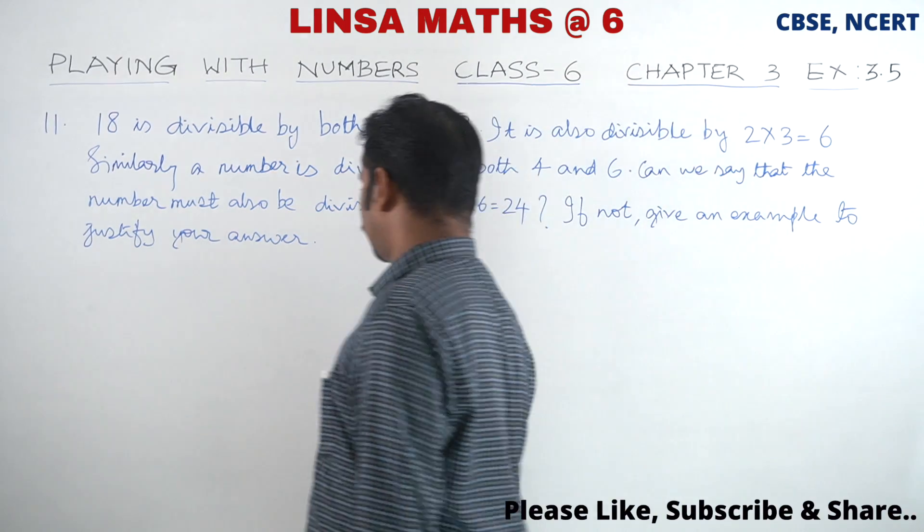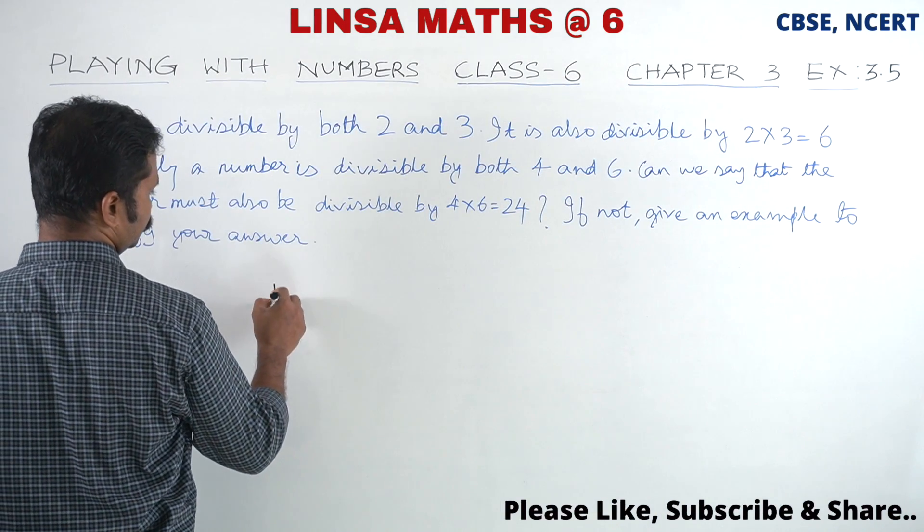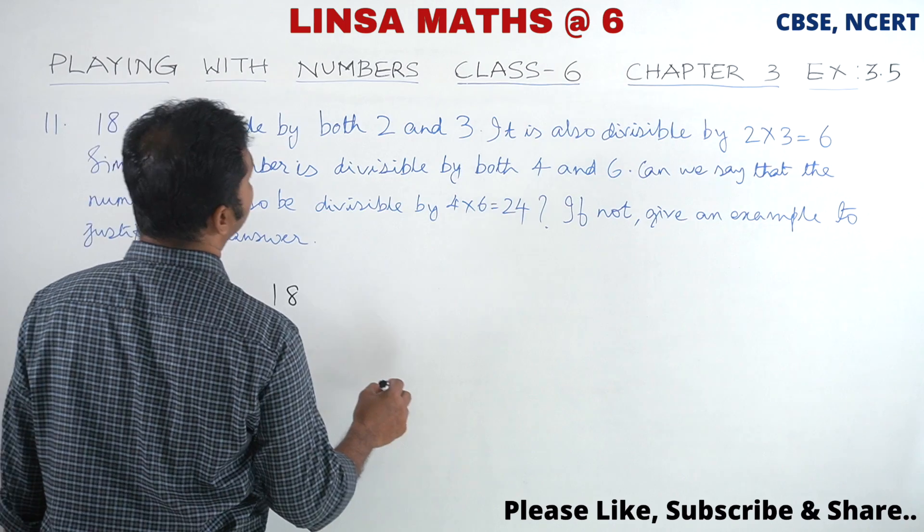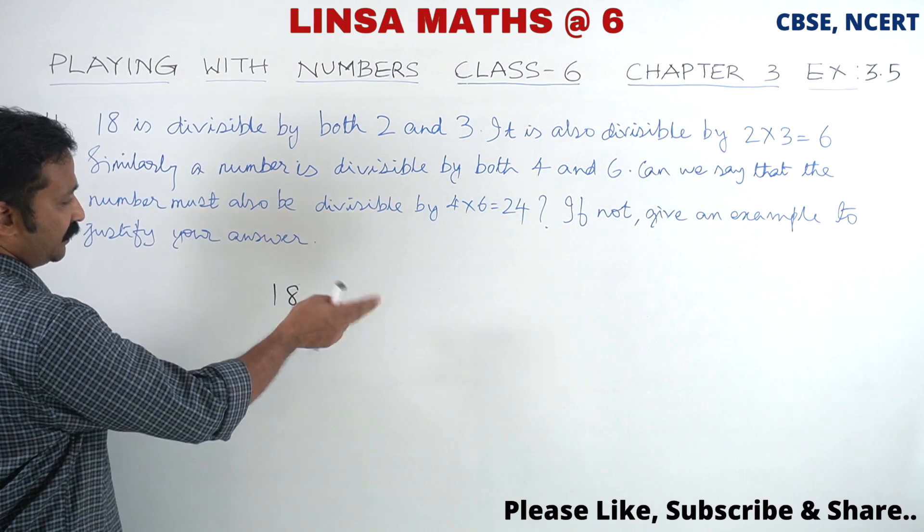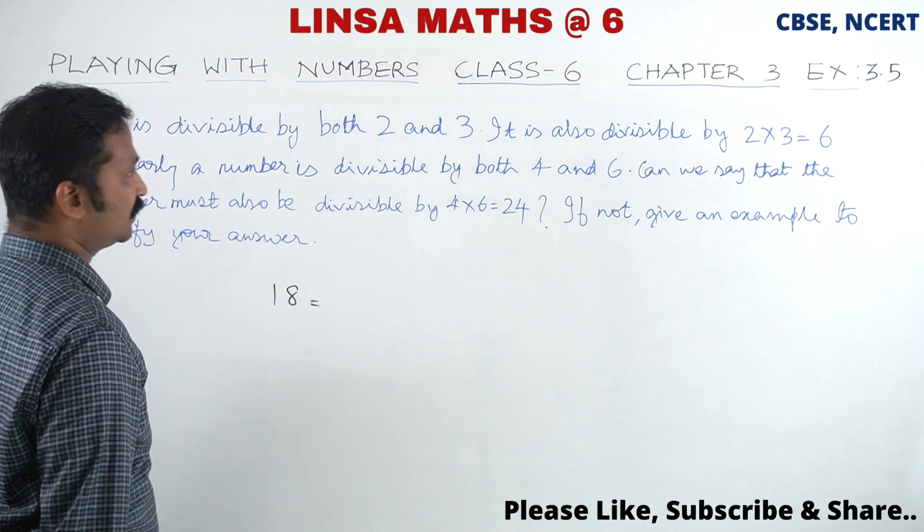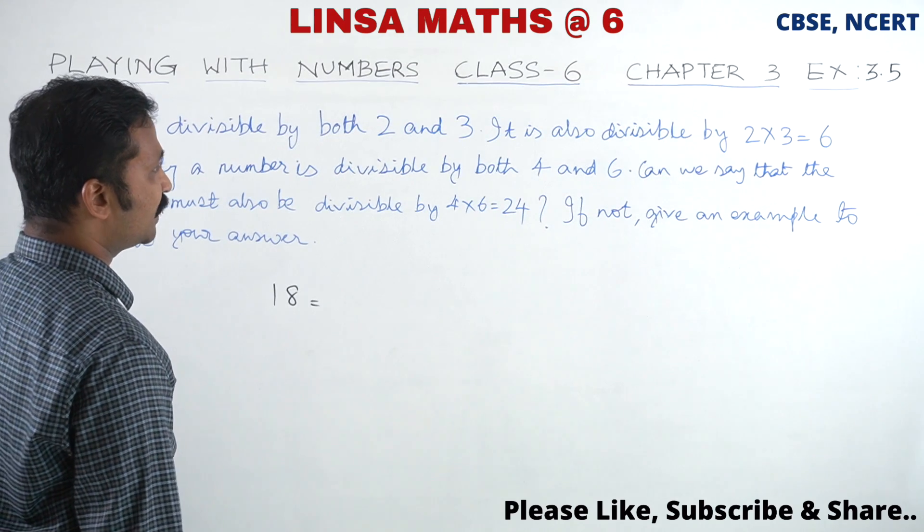18 is divisible by 2 and 3. Let's see. 18 divided by 2 gives 9, divided by 3 gives 6. 1 plus 8 equals 9, which is divisible by 3. It is also divisible by 2 into 3.